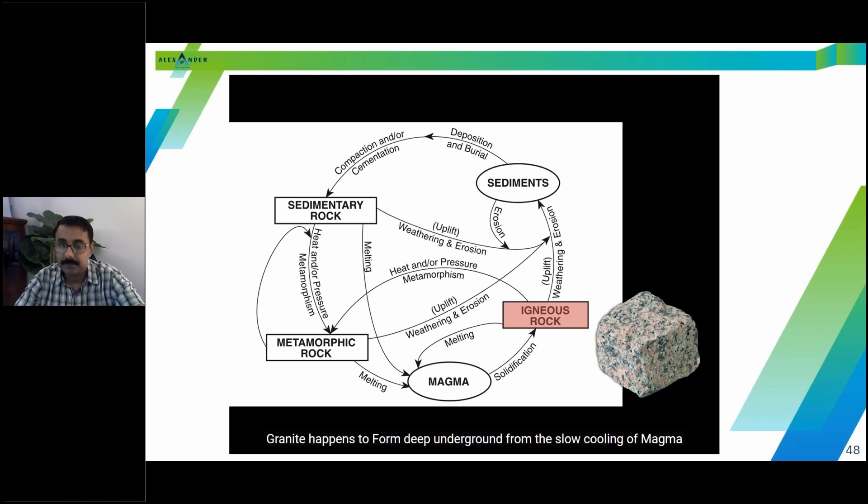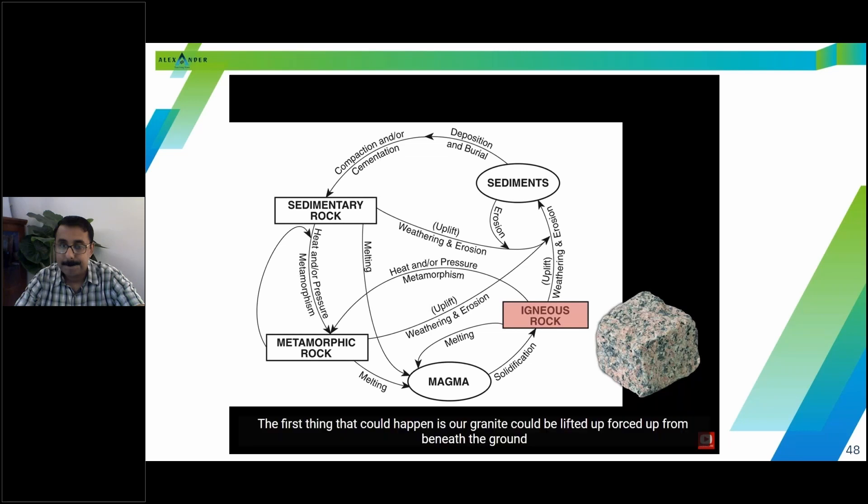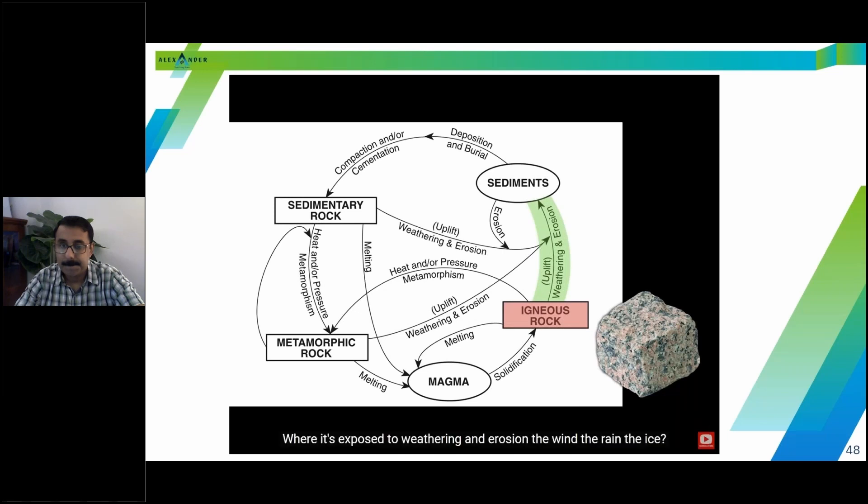Granite happens to form deep underground from the slow cooling of magma. But the question we want to look at now is, what can happen to this igneous rock over time? And there's a handful of possibilities. First thing that could happen is our granite could be lifted up, forced up from beneath the ground, where it's exposed to weathering and erosion. The wind, the rain, the ice, these forces break this rock down into little small pieces called sediments. So now our granite has been broken into small pieces of granite.